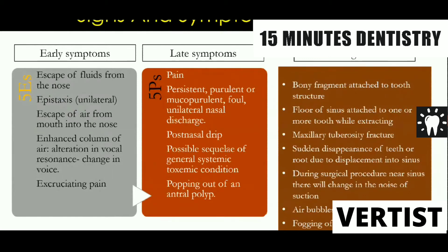Pain is not necessarily always severe. In short, you need to write the 5 E's for early symptoms. Late symptoms: patient may develop chronic pain, persistent purulent discharge with persistent foul smell, nasal polyp, and popping out of an oro-antral polyp. These are the signs and late symptoms of oro-antral fistula.